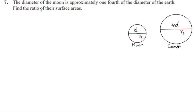Hello everyone, this is question number 7, exercise 13.4. The diameter of the moon is approximately one-fourth of the diameter of the earth. Find the ratio of their surface areas.